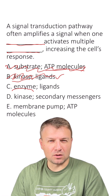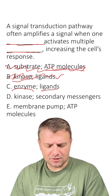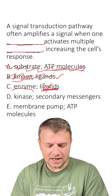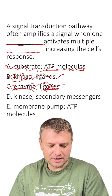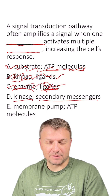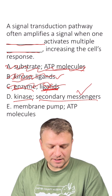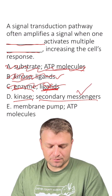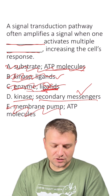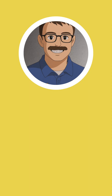C: enzyme. Kinases are enzymes, but they're not activating ligands, so that's not right. D: kinase — that sounds right — and secondary messengers — that sounds right as well. E: membrane pumps, ATP molecules. No, this is why D is the right answer.